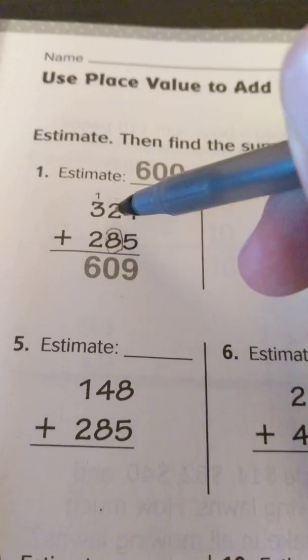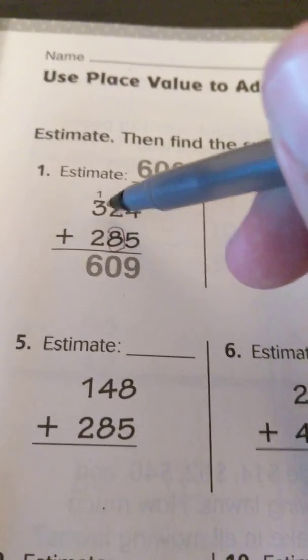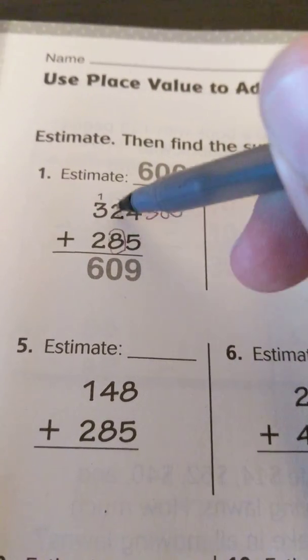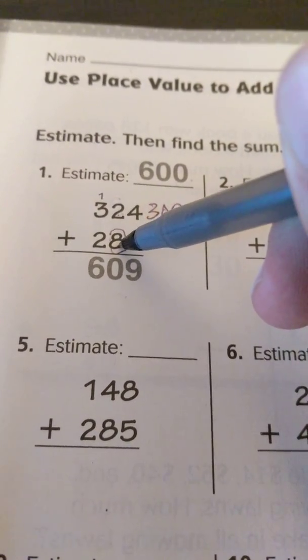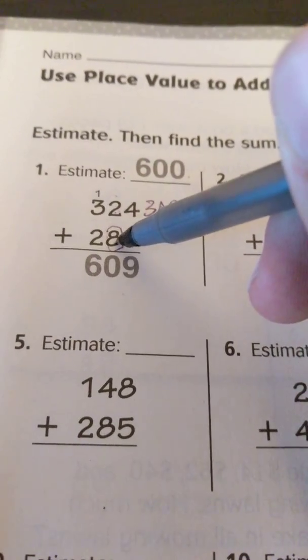Since this is less than five we're going to keep this at 300. In the tens place here we have a number that is larger than five or larger, so that means we round up.